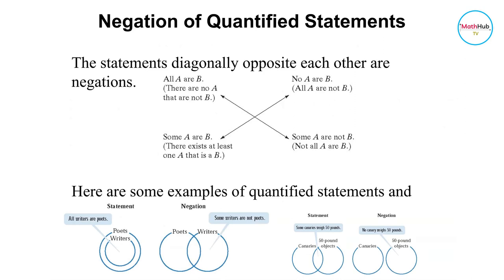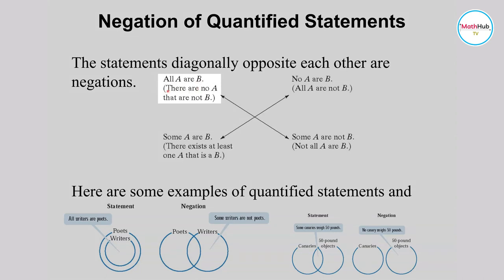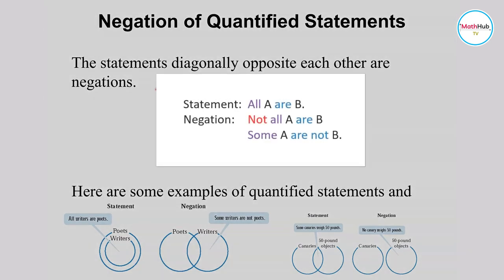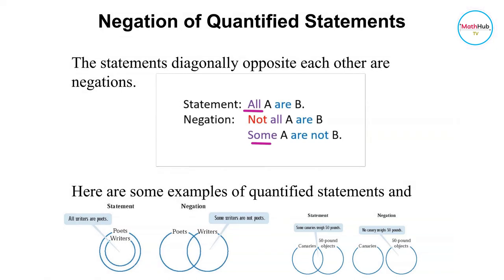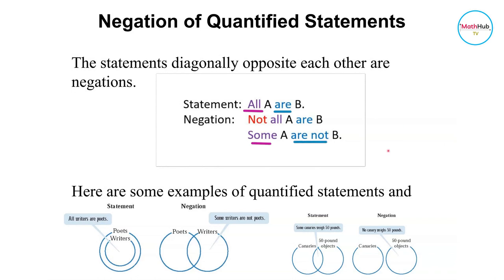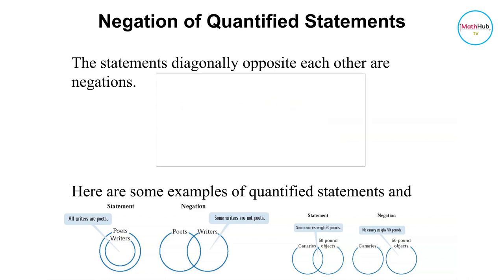From the previous examples, we can easily see the negation of quantified statements. When you say 'All A are B' and negate it, the negation of 'all' is 'some.' So 'All A are B' becomes 'Some A are not B,' which is also equivalent to 'Not all A are B.' Similarly, the negation of 'some' is 'no,' so 'Some A are B,' when negated, becomes 'No A are B.'